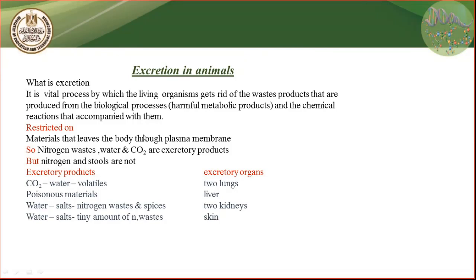What about the two lungs? The two lungs get rid of carbon dioxide, water, and volatile materials. Volatile materials are substances with aromatic smells — the volatile materials — such as garlic, onion, spices, and similar substances.